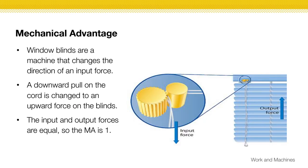Here's another example of what mechanical advantage looks like. You have window blinds here, another example of a machine, not our typical definition of a machine, but it changes the force. The input force is you pulling down. The output force is the blind actually moving. Those are the differences. If you had those numbers, you would divide them to get your mechanical advantage.